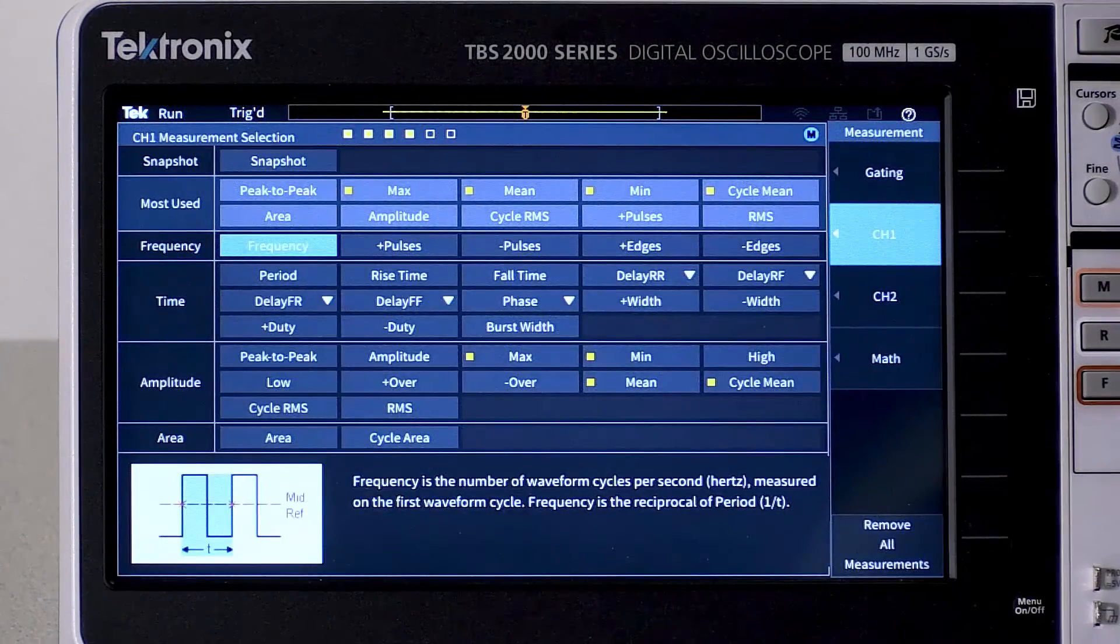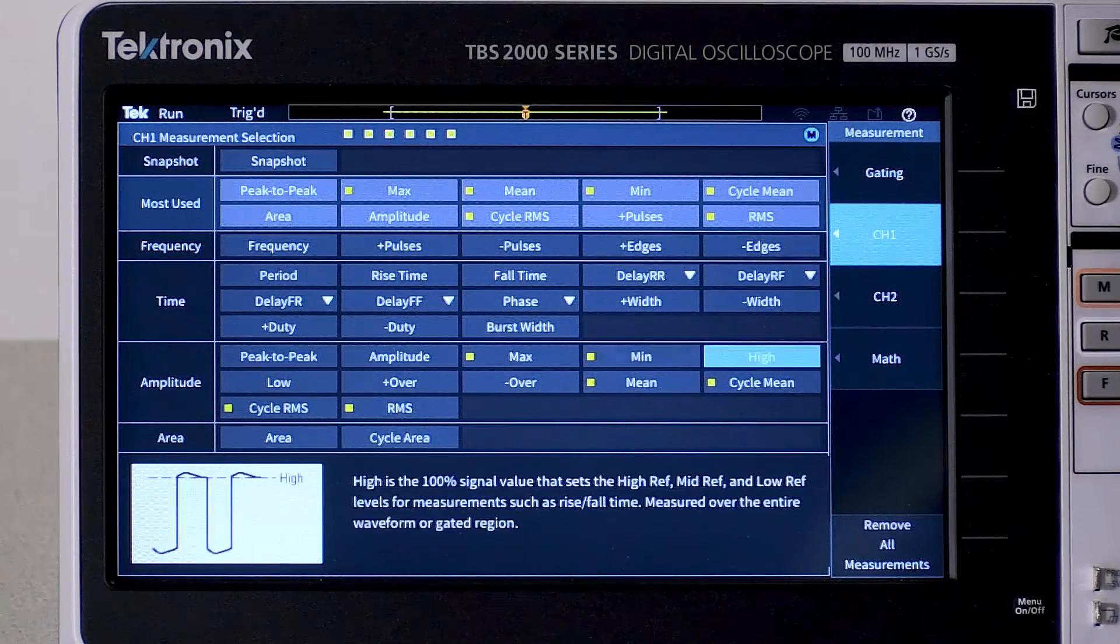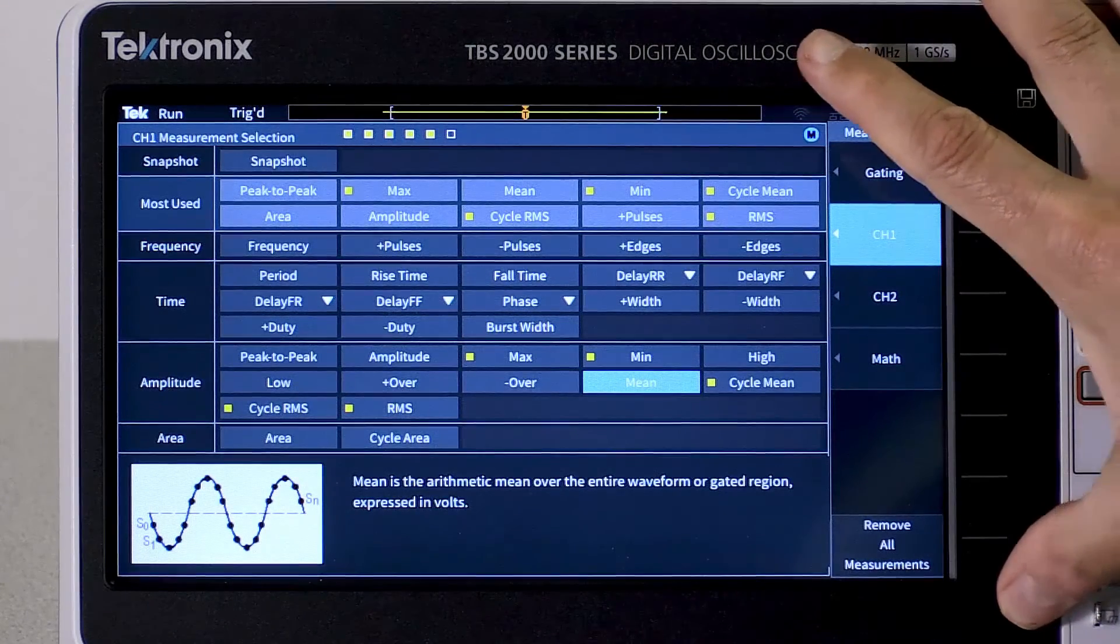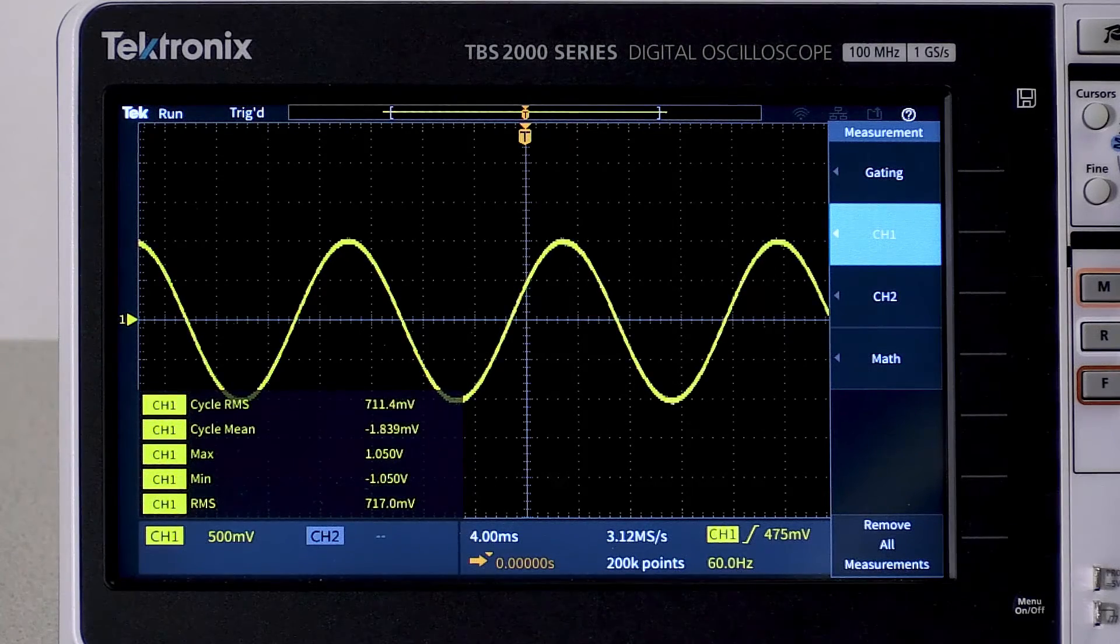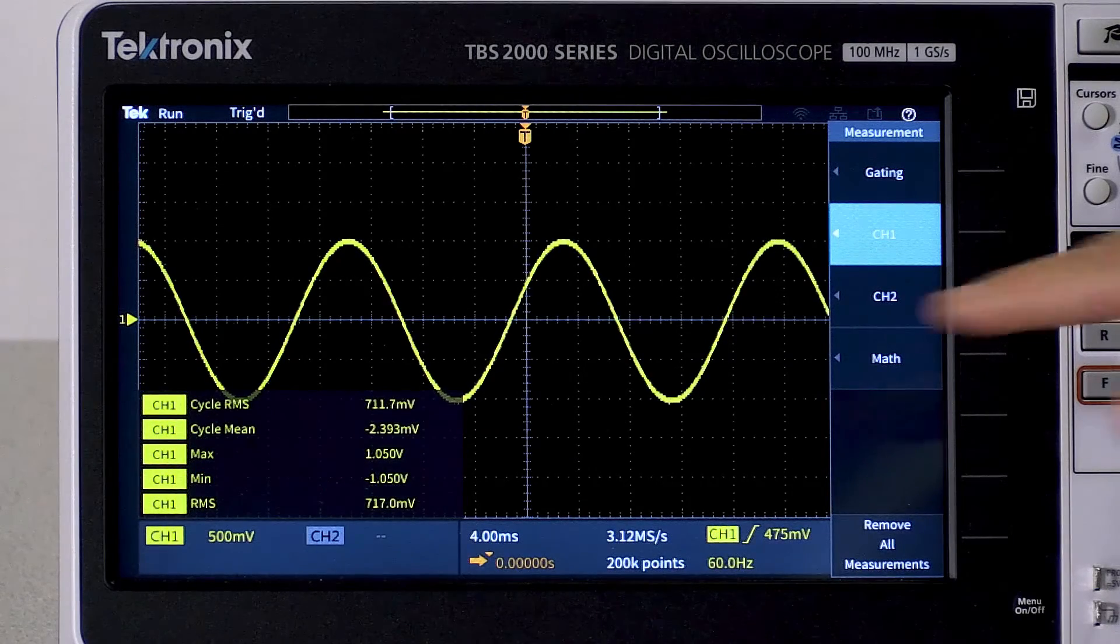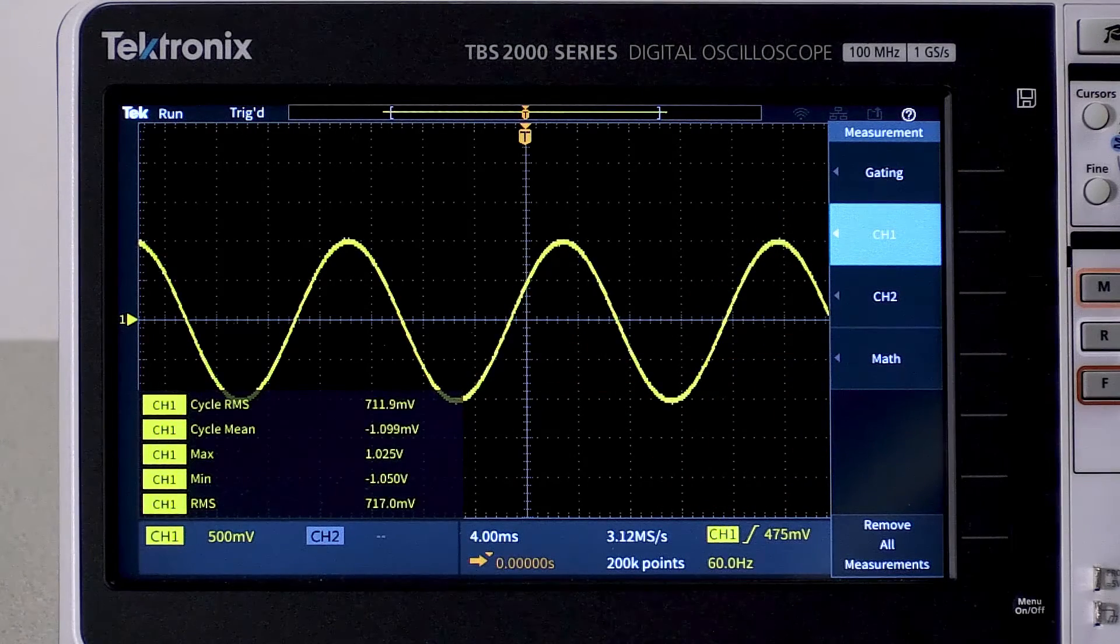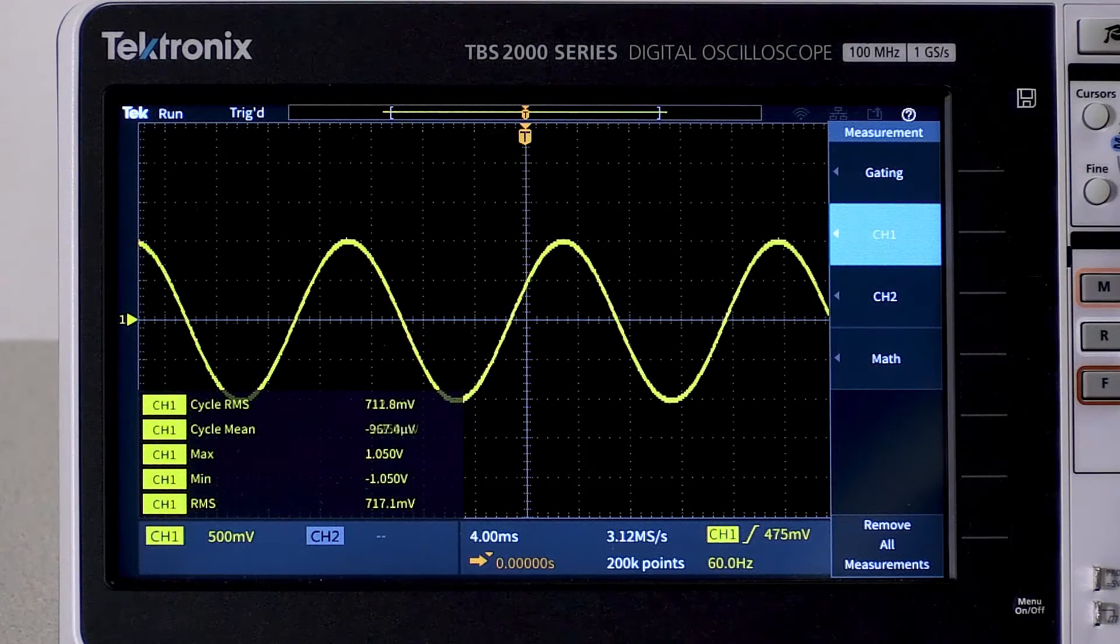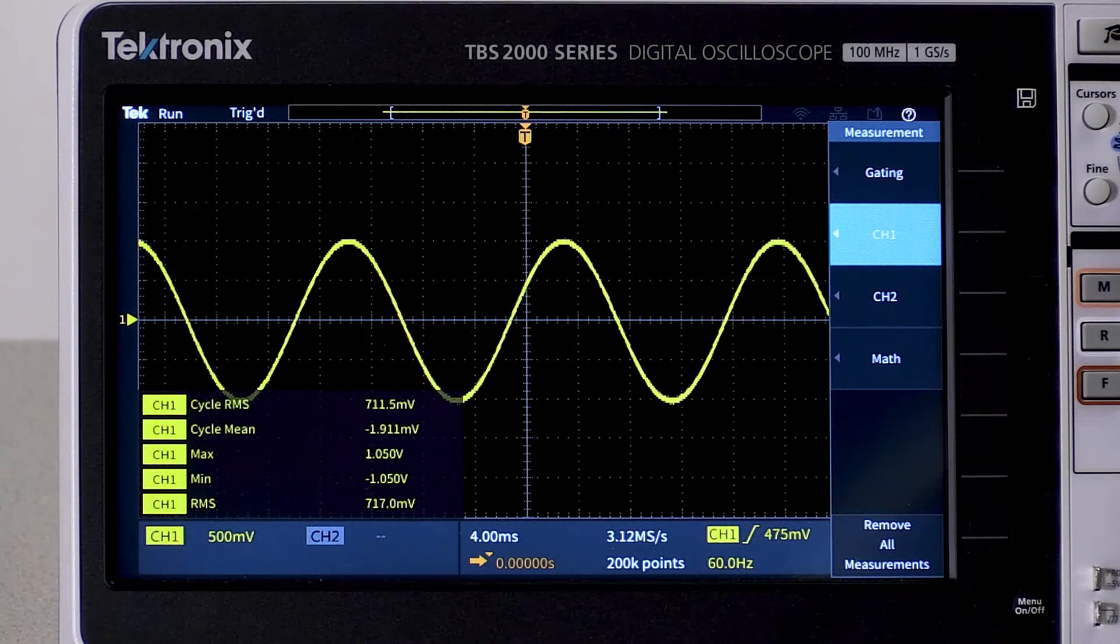Let's have a look at the sine wave on the scope again. I'm going to turn on cycle RMS and RMS. I'll turn off the mean measurement. There are a few things to notice, even though the cycle mean is still around zero volts. The cycle RMS is a little over 700 millivolts, or about 70% of the peak. So the amplitude or max is 1 volt.